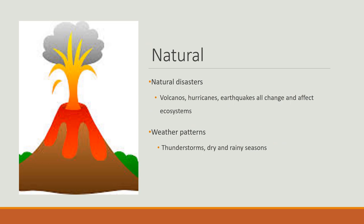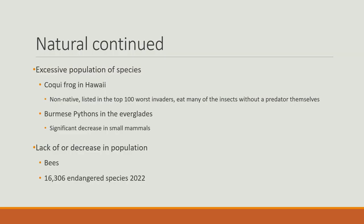Another contributor to problems is natural causes. Natural disasters such as volcanoes, hurricanes, and earthquakes all change and affect ecosystems, along with weather patterns such as thunderstorms, dry and rainy seasons. We also have excessive population of invasive species — for example, the coqui frog in Hawaii and the Burmese pythons in the Everglades. We also have a lack of or decrease in population with animals such as bees. There are currently 16,306 endangered species.